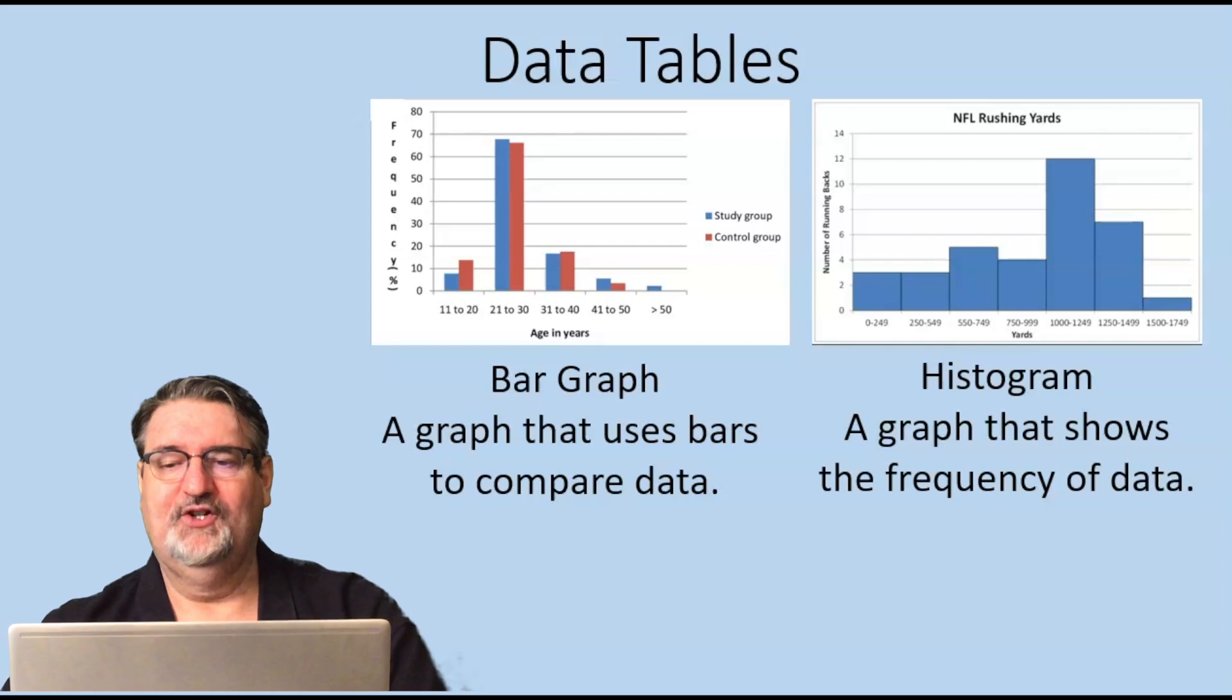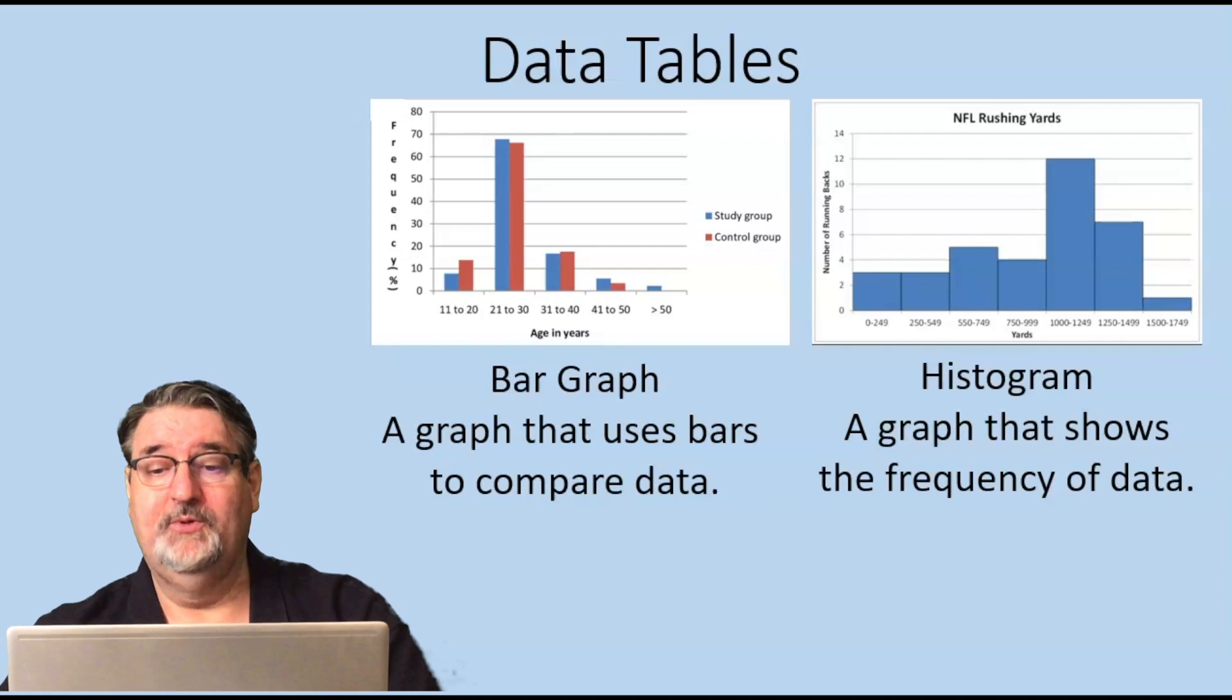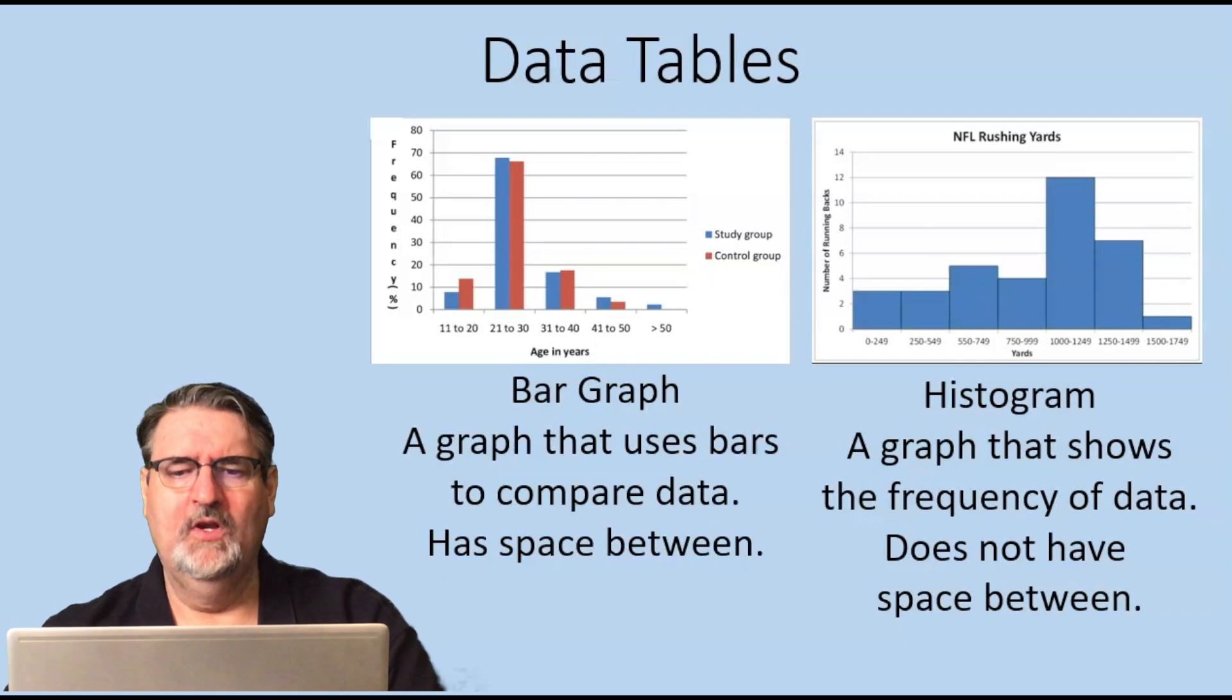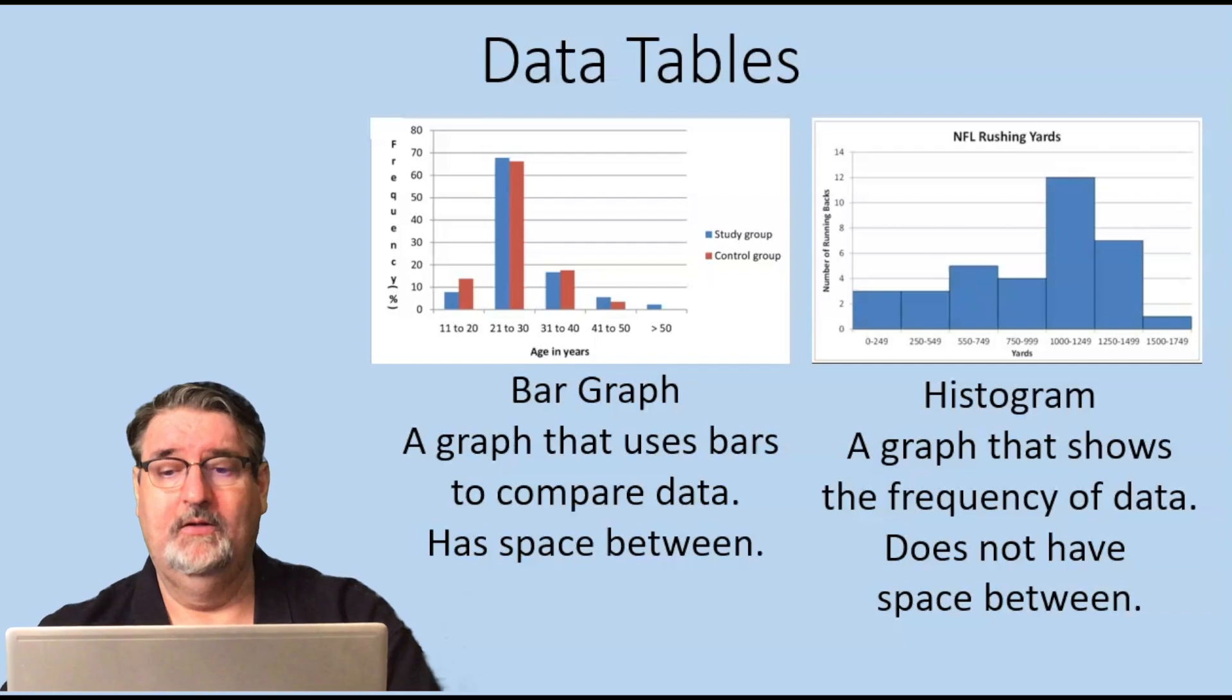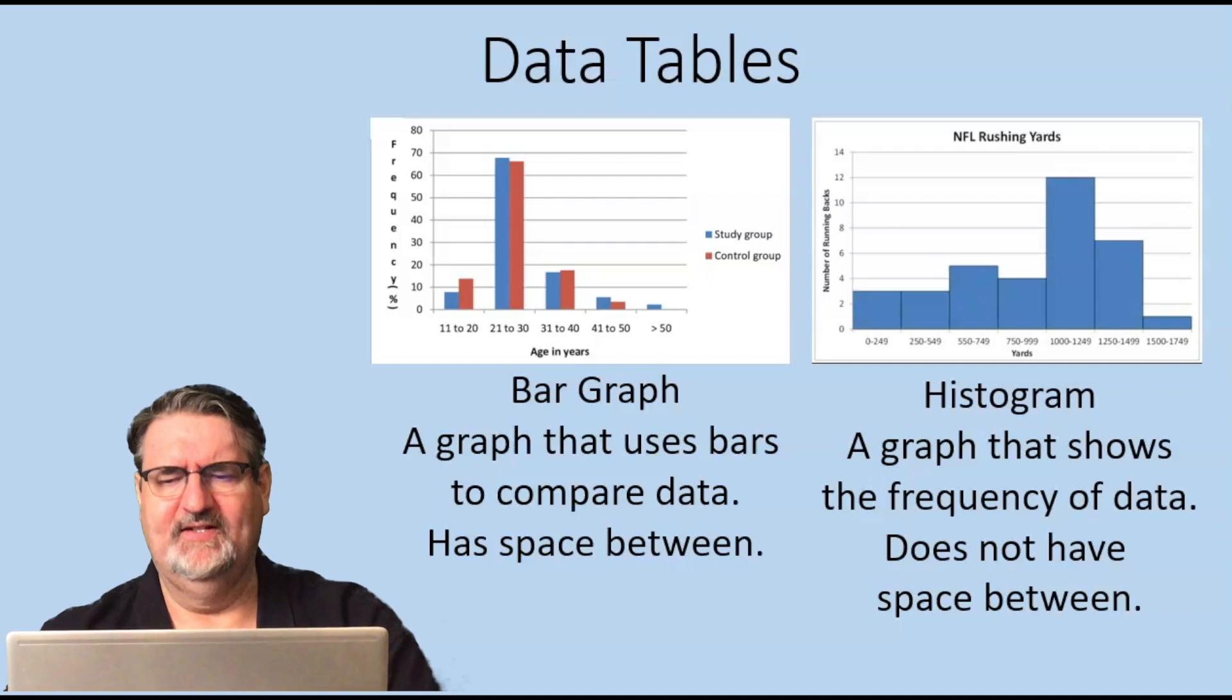So one is used to compare data, the bar graph, and the histogram is a graph that shows the frequency of data. Another difference is a bar graph has spaces in between, a histogram is a graph that shows the frequency of data and it does not have spaces in between.